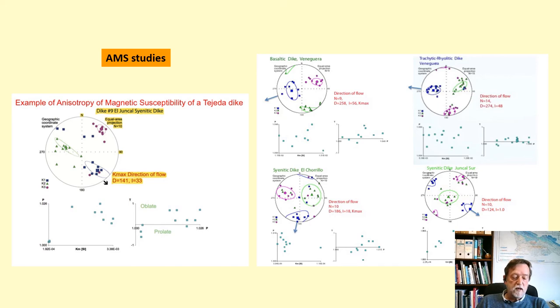The Kmax axis inclinations show that about 70% of the intrusives were fed by inclined to vertical magma fluxes, inclinations greater than 30 degrees, and the rest of them by horizontal to sub-horizontal magma fluxes.